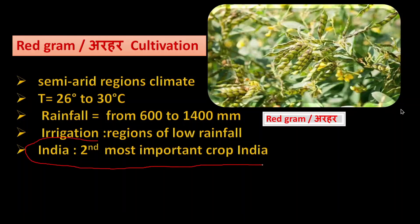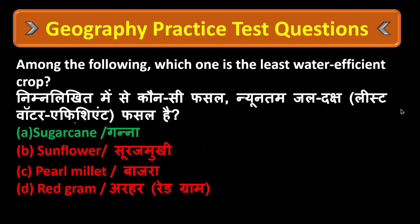India is the largest producer and consumer of red gram in the world. Good land preparation is necessary. The correct answer is Option A: Sugarcane. Sugarcane is the least water-efficient crop, meaning it requires highly more water than other crops.